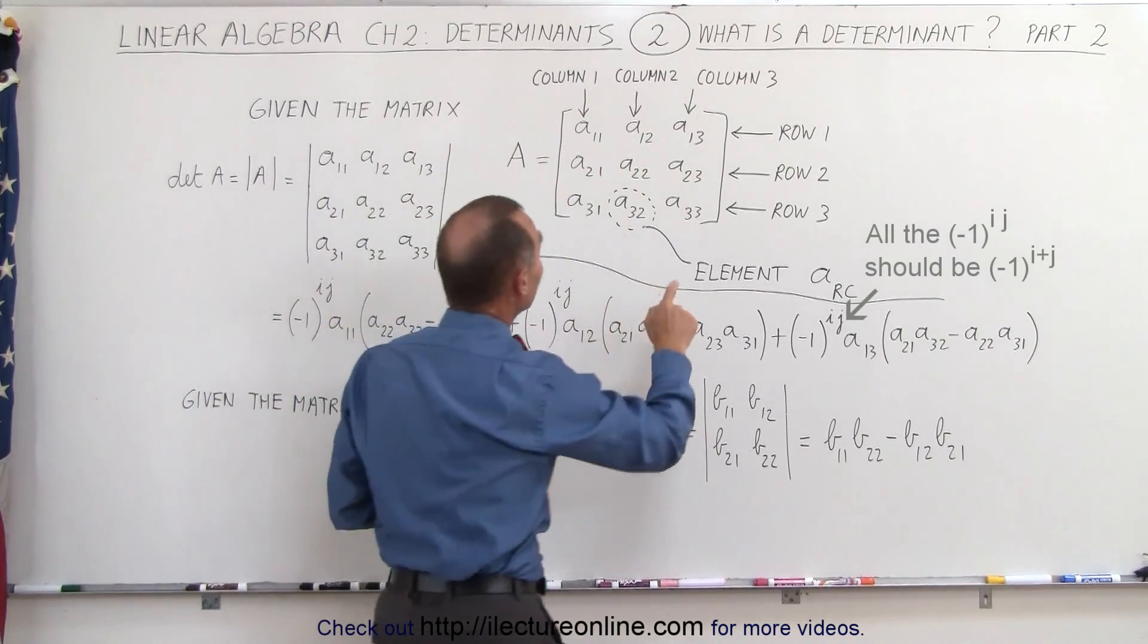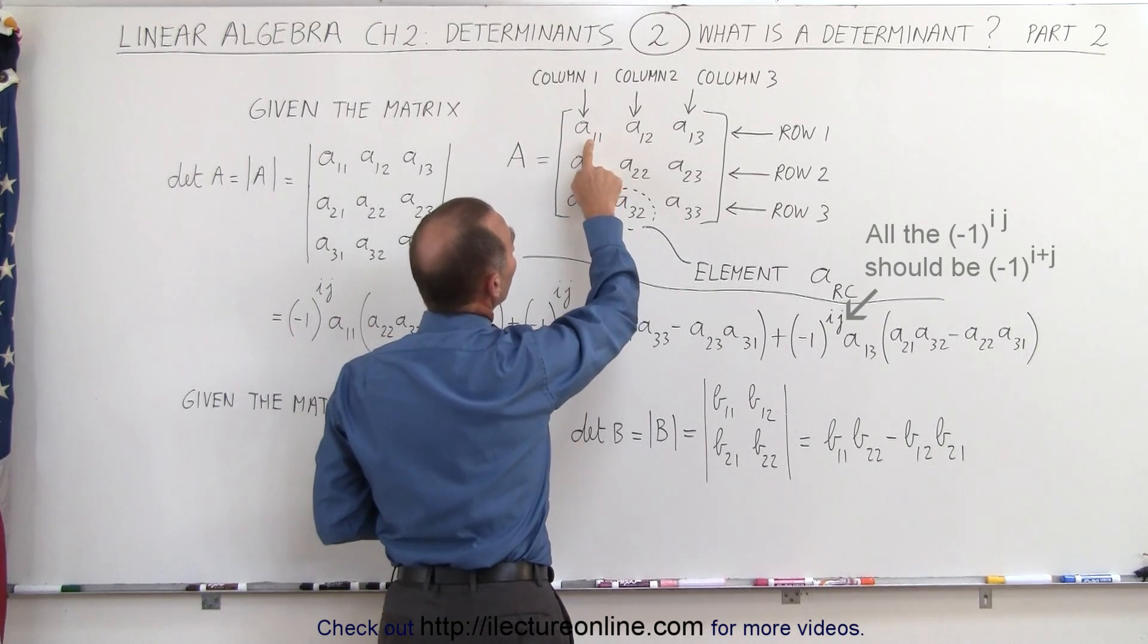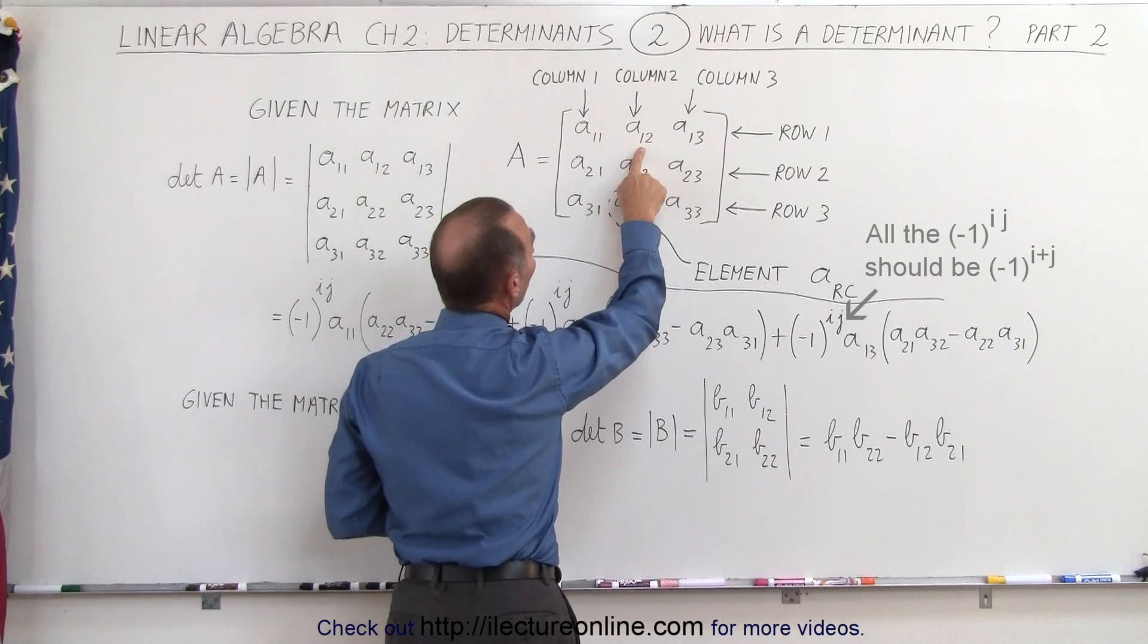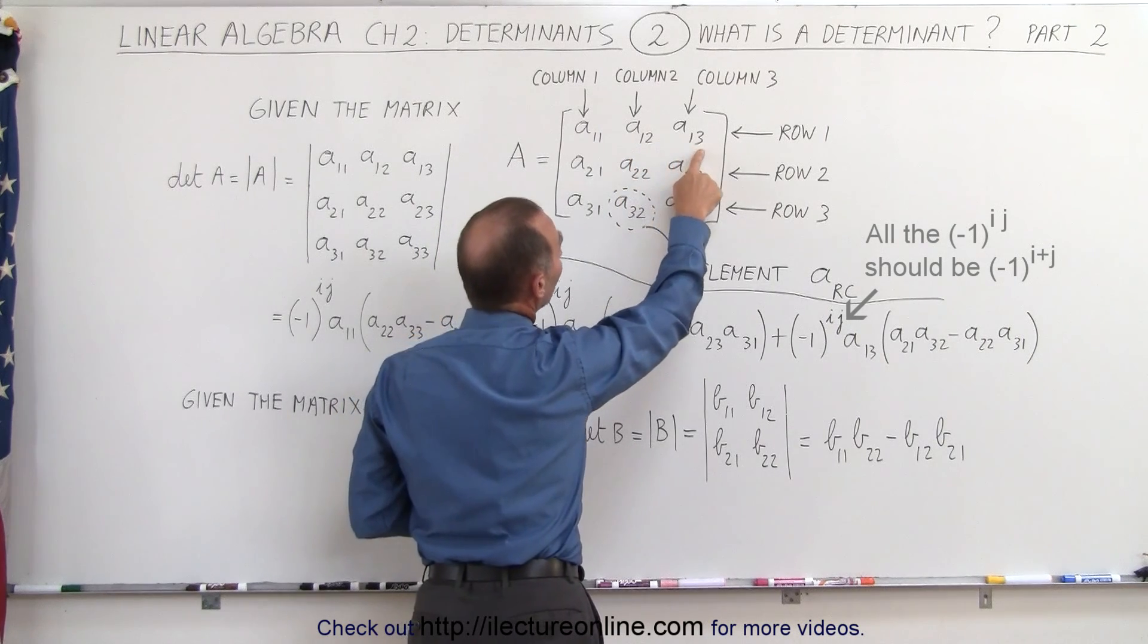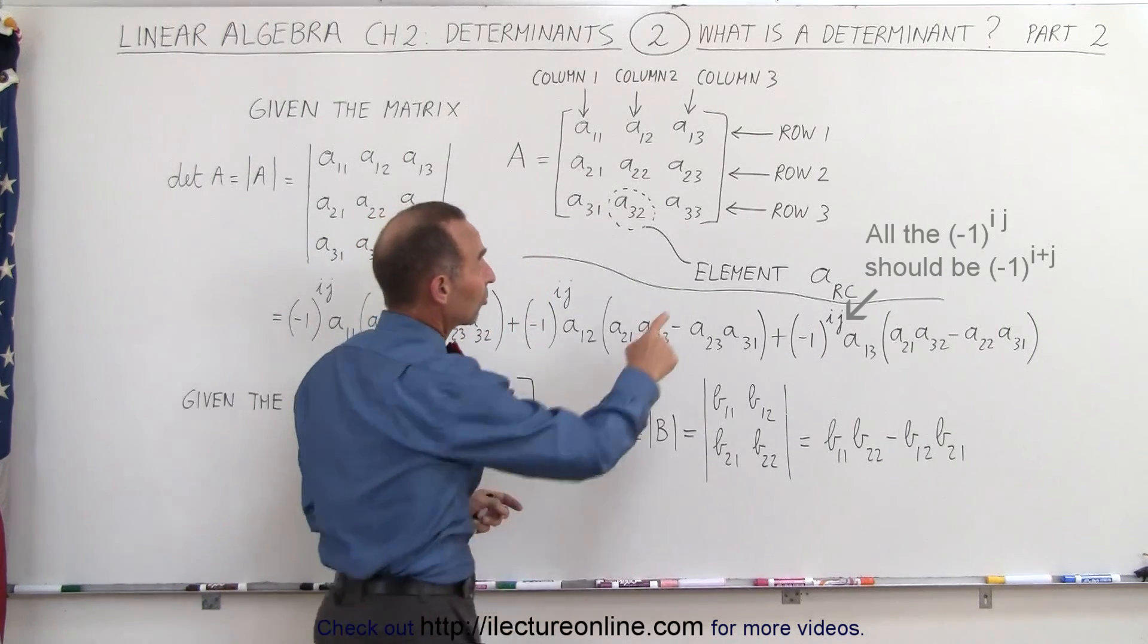But again, starting with the matrix, notice that the subscripts have the row first and the column second, so this is row 1 column 1, row 1 column 2, row 1 column 3, row 2 column 1, and so forth. So the elements have the subscripts.